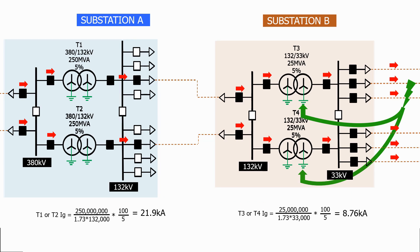We will then look at some more complex networks so that we can define the magnitude of the ground fault current and determine which transformers the ground fault current will flow back to.